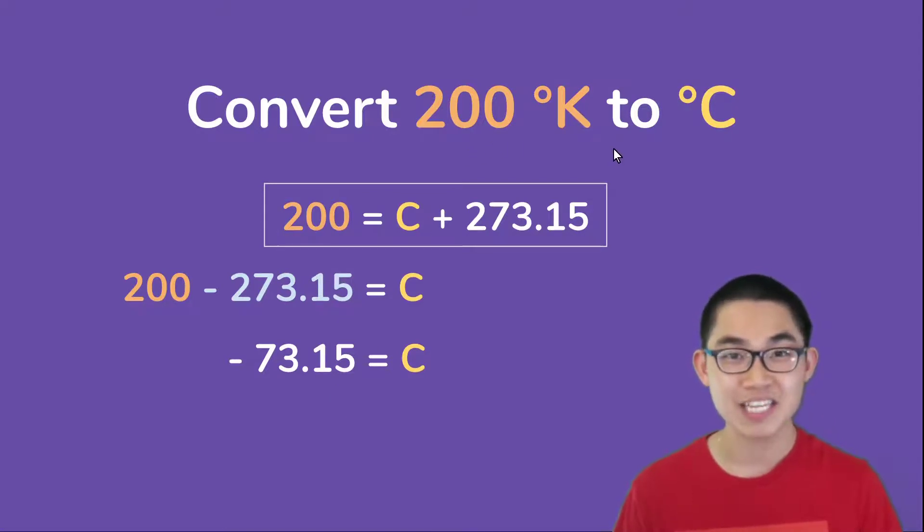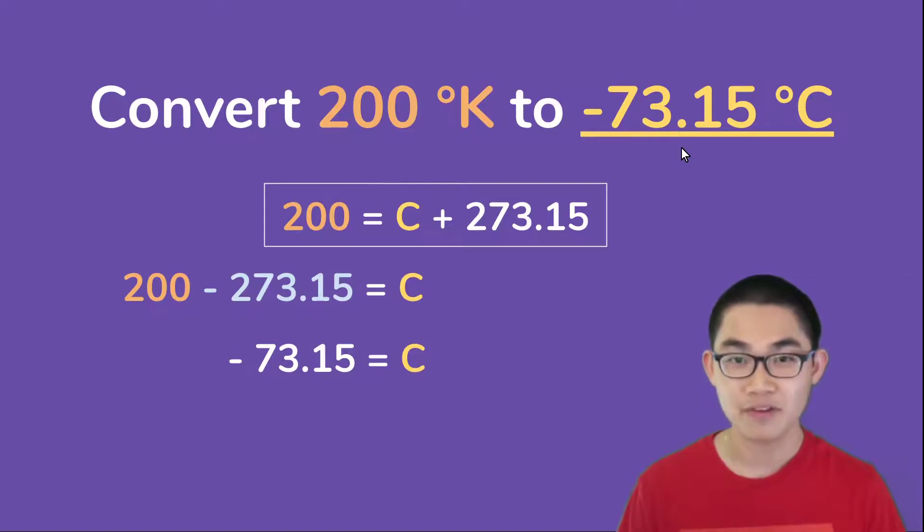So this is our answer—200 degrees Kelvin is equal to negative 73.15 Celsius.